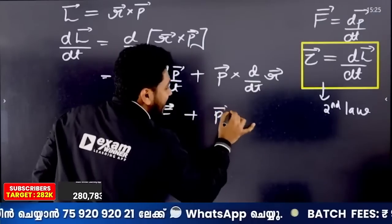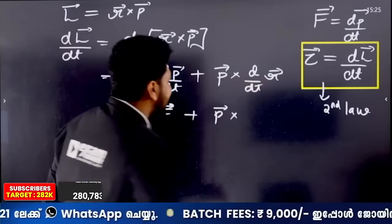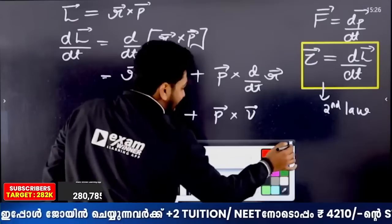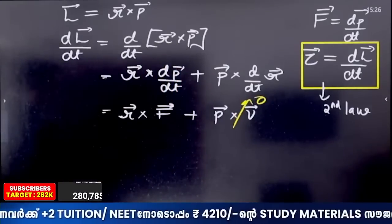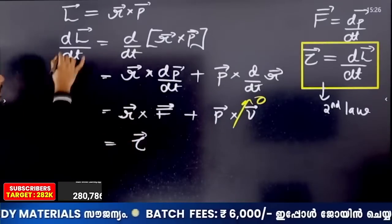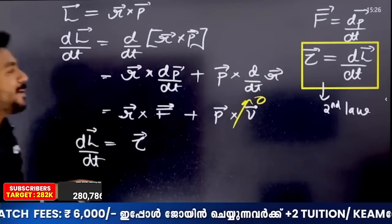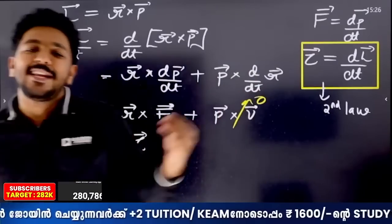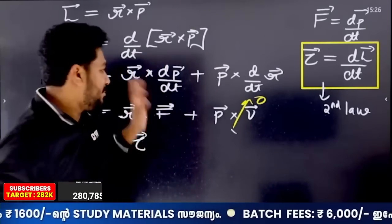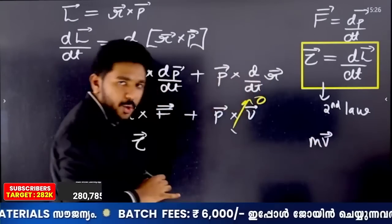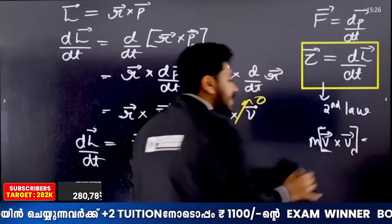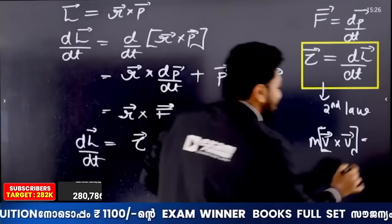The second term is p cross dr by dt. Now, dr by dt is velocity. So the second term becomes p cross v. Since p equals mass times velocity, this is mass times v cross v. The cross product of a vector with itself: v cross v equals v·v·sin(0) = 0. So the second term p cross v equals zero.